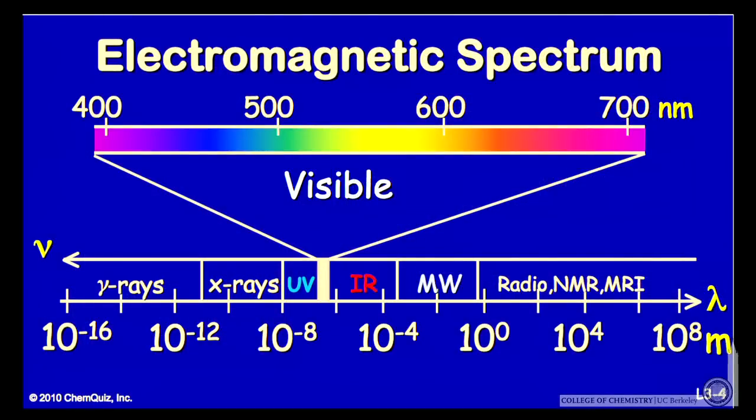The visible spectrum, in particular, in between the infrared and ultraviolet, we're going to look at a lot. These are the wavelengths that our eyes are sensitive to, from 400 to 700 nanometers, approximately.